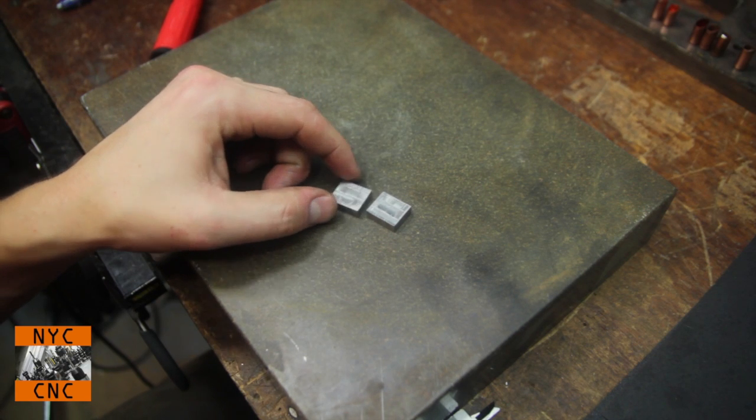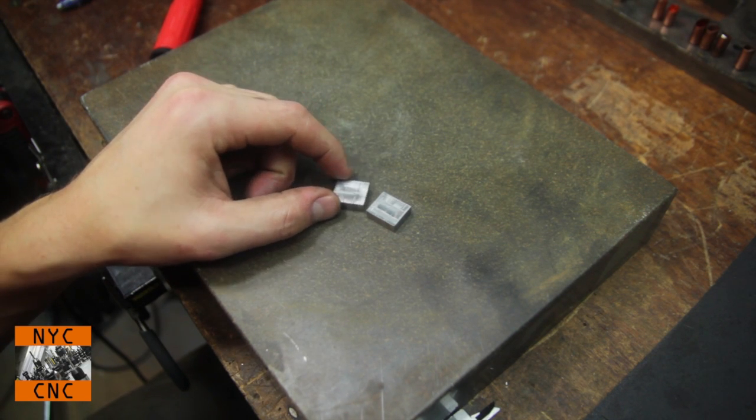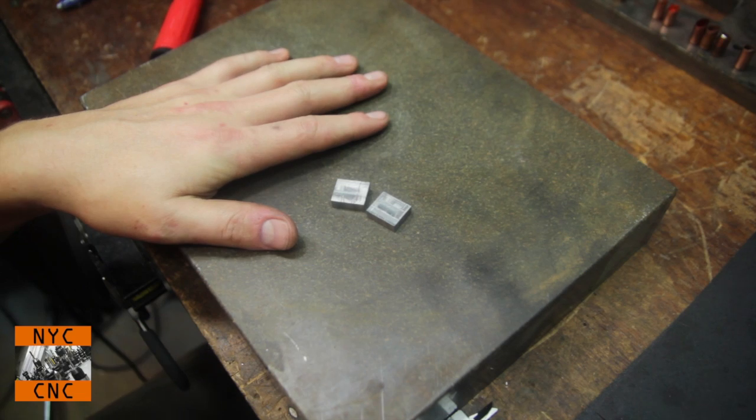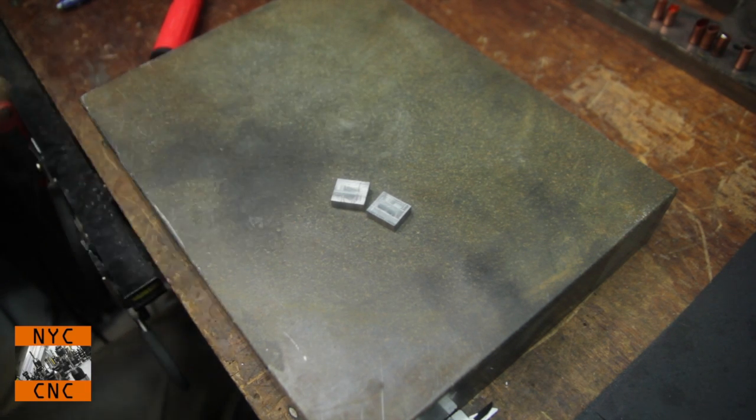We've got our two parts. Now what we're going to do is get rid of the tool marks. So I've got some 100 grit, 220 grit, and 320 grit sandpaper, and I've got a little granite surface block I use just for sanding stuff flat.